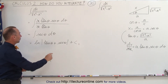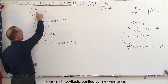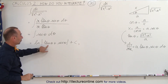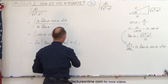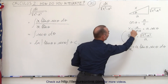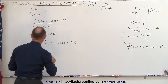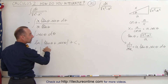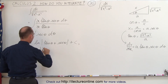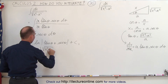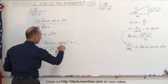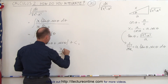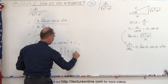Since we have this in terms of theta and our original problem was in terms of x, we need to substitute back in. For the tangent of theta we substitute, and for the secant of theta we write x over a. So this becomes equal to the natural log of the tangent of theta written as the square root of x squared minus a squared over a, plus the secant of theta written as x over a. And we have a constant of integration.